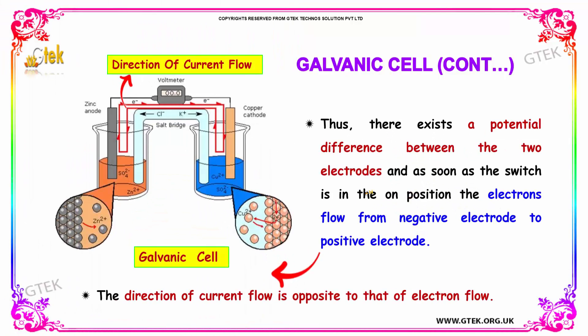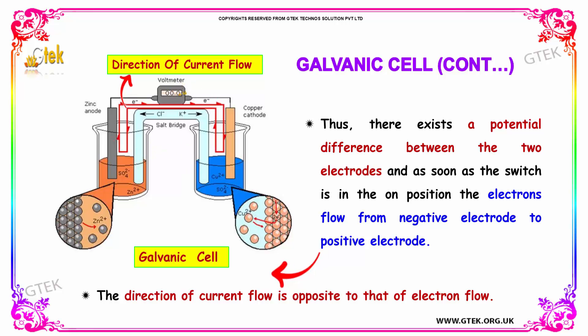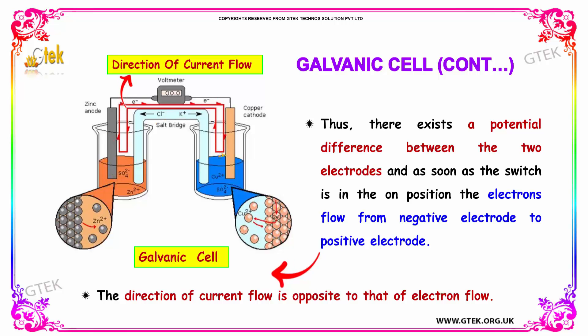There exists a potential difference between the two electrodes. As soon as the switch is in the on position, electrons flow from the negative electrode towards the positive electrode. The direction of current flow is opposite to that of the electron flow.